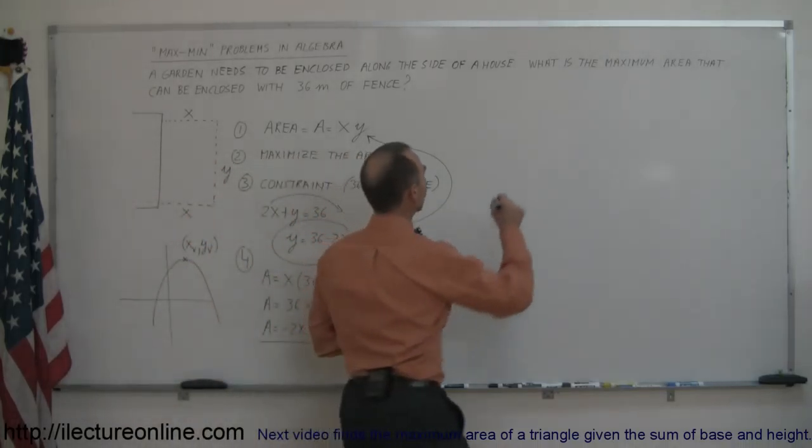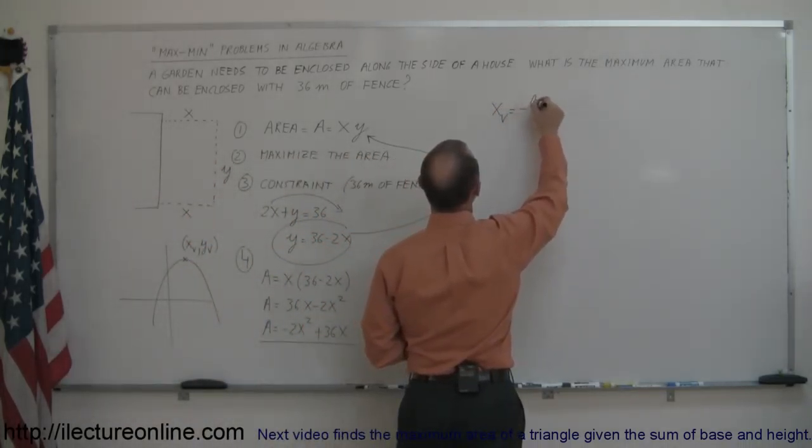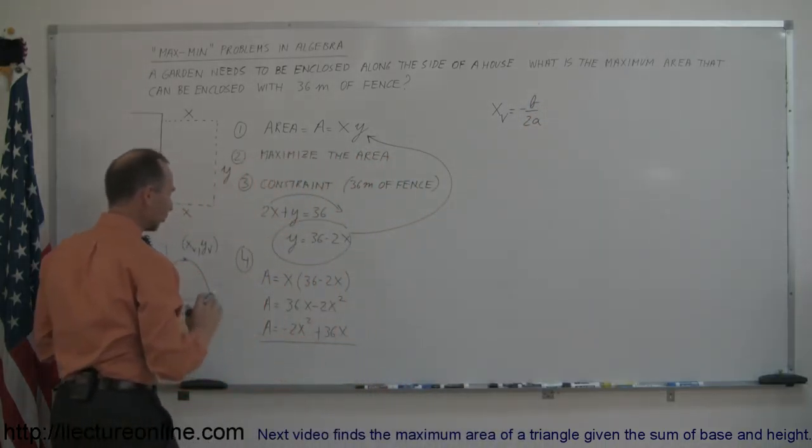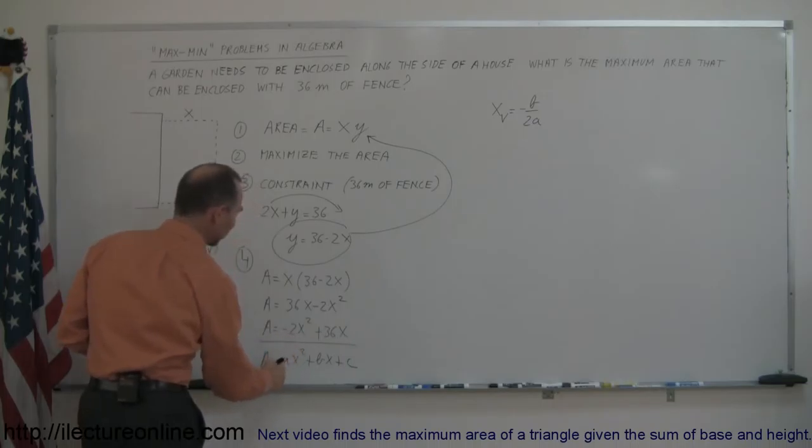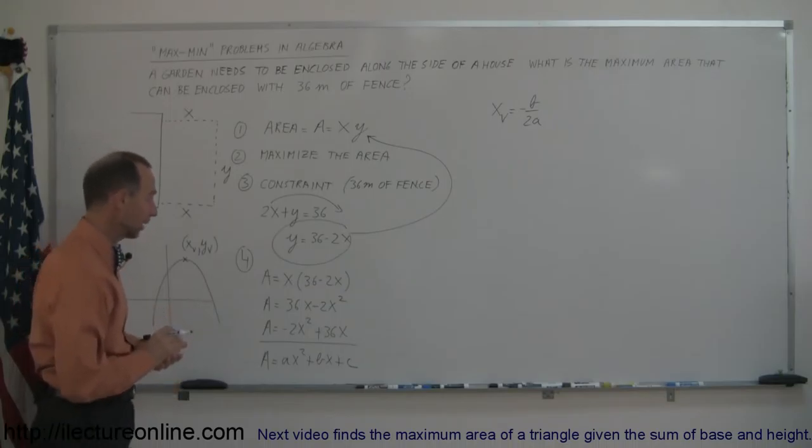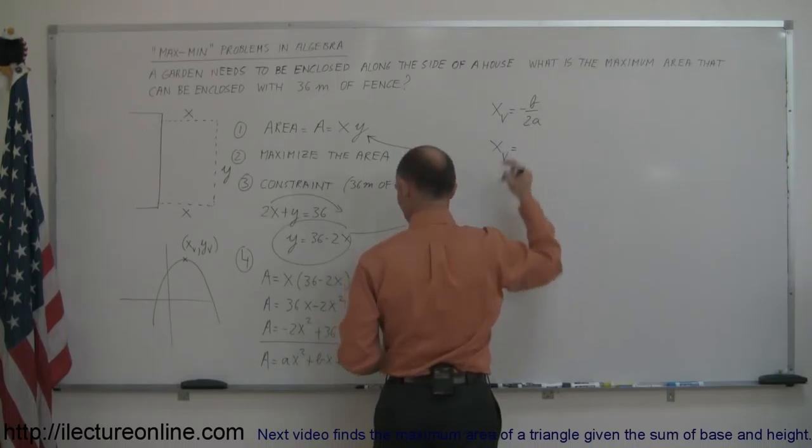And if you remember right from elsewhere, we can say that the x sub v is equal to minus b over 2a. Remember that a general quadratic equation, we have y equals ax squared plus bx plus c. So minus 2 would be a, 36 in this case would be b, and if we plug a and b in that equation, we find the x value of the vertex.